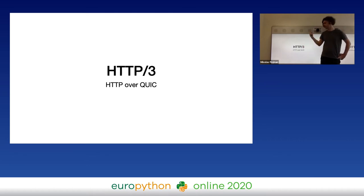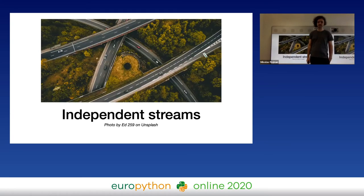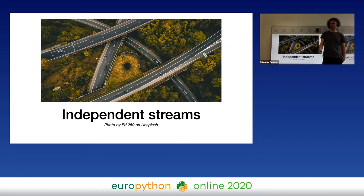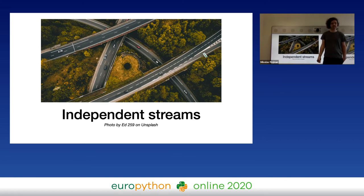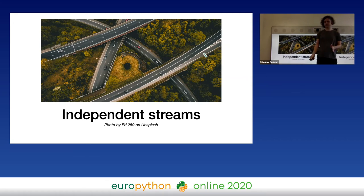One does not rewrite the TCP layer just for fun — the new layer should give us some advantages. The main advantage of QUIC is that it's multiplexed, supporting many independent streams — many independent logical flows within a single connection. But didn't I tell you that multiplexing is the main advantage of HTTP/2? I did, but let me explain the difference.